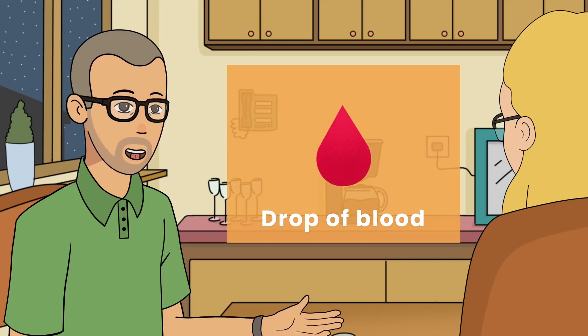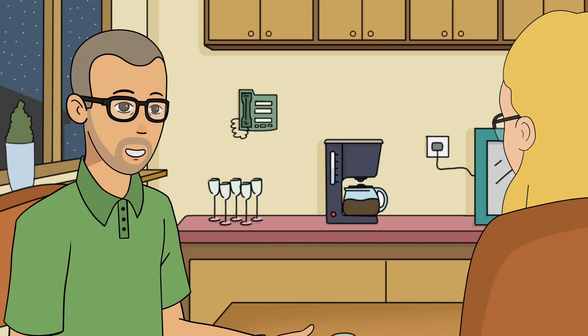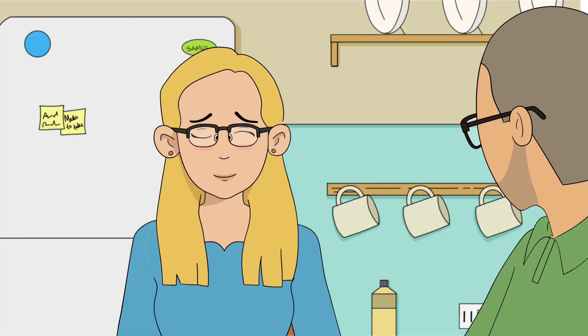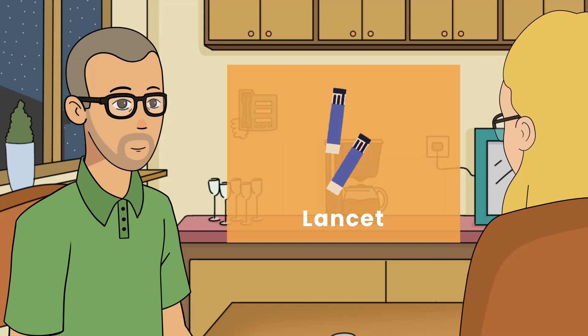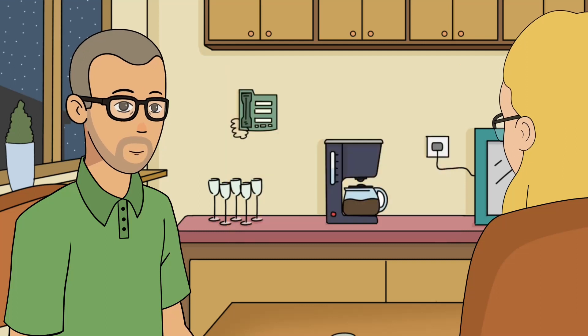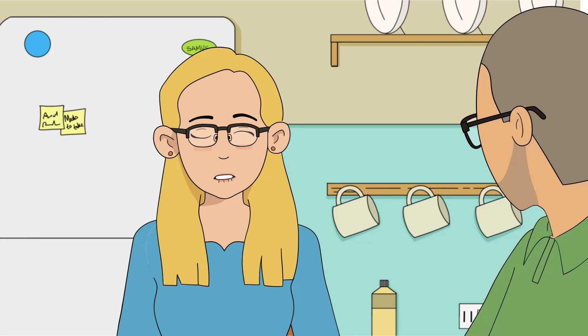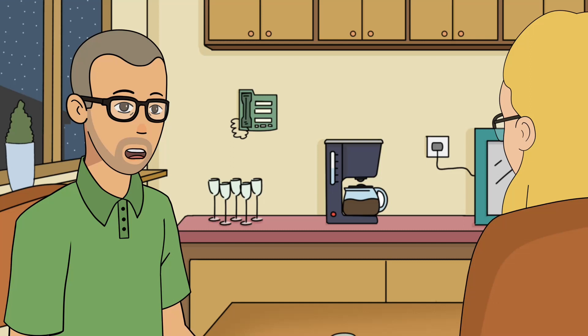And the machine will display the blood glucose level on the screen. So how do you get the blood? Do we draw it using a syringe? Oh no, no, it is much simpler than that. We use a lancet for pin prick that you buy separately. A lancet is somewhat like a needle, right? Yeah, it's a needle used to prick the finger.